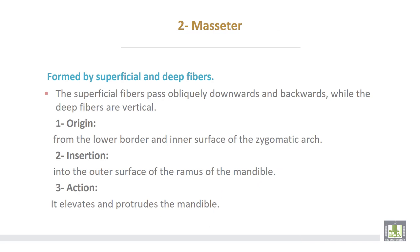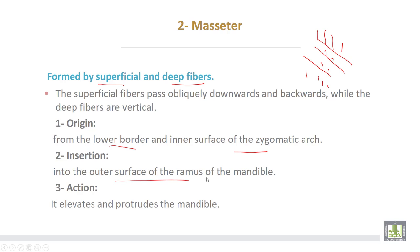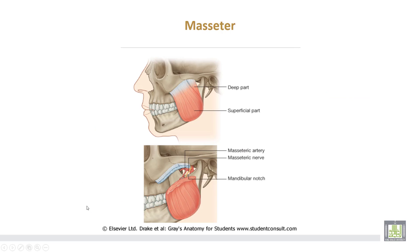The masseter muscle is formed by superficial and deep fibers. The superficial fibers run obliquely downwards and backwards, while the deep fibers are vertical. It takes origin from the lower border and the inner surface of the zygomatic arch, and is inserted into the outer surface of the ramus of the mandible. The action of the masseter muscle is to elevate and protrude the mandible.